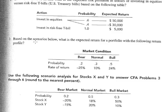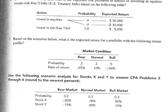Problem number two: based on the scenarios below, what is the expected return for a portfolio with the following return profile? You have this table with three possible outcomes. If there's a bear market, the return is minus 25%, and the probability is 0.2 or 20%. If the market is normal, which is 30% likely, the return would be 10%. And if there's a bull market, the return would be 24%, and it's 50% likely. You take the weighted average to get the expected return.